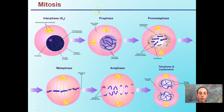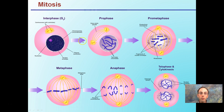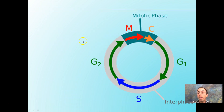Mitosis is broken into these phases: prophase, prometaphase, metaphase, anaphase, telophase, and then cytokinesis. Interphase — specifically the G2 phase — is occurring just before mitosis begins.